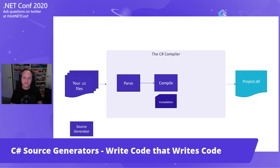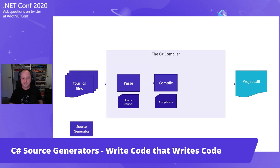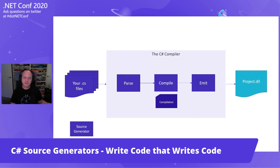With C# 9, if you have a source generator in the mix, what happens after the compile phase is that compilation — the syntax tree and the symbolic information — gets sent to a source generator. A source generator is just a DLL that you provide. You tell the compiler where to load source generators from. That source generator gets to run, look at those syntax trees and that compilation, and it generates a string of new source code. That new source gets parsed, becomes a syntax tree, gets compiled, melds with your project's compilation, goes to the emit phase, becomes IL, and out the door to a DLL.